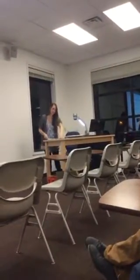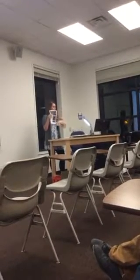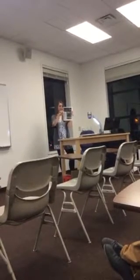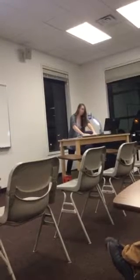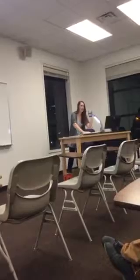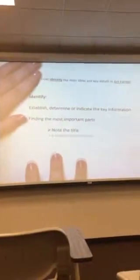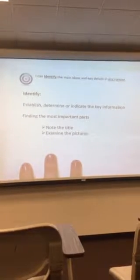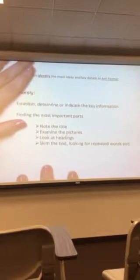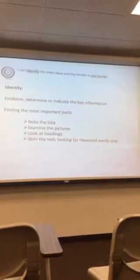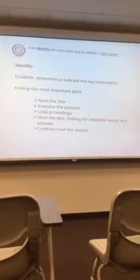When we are reading through our text — which it was cool because National Geographic you can access online, and it can actually read to the students — when you are reading through, make sure you are noting the title, so really look at Ant Farmers and see what they mean by that. You are also going to look at the pictures, the headings, and skim through the text. Who can remind me what skim means? Quickly glance over it. Excellent. So, quickly glance through the text and look for repeated words and phrases. Then, after you've done all of that, carefully read through the rest of the section.